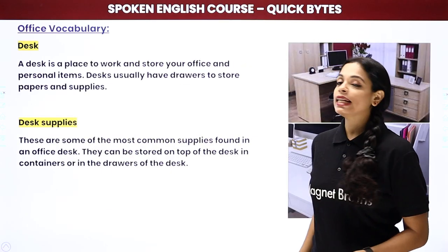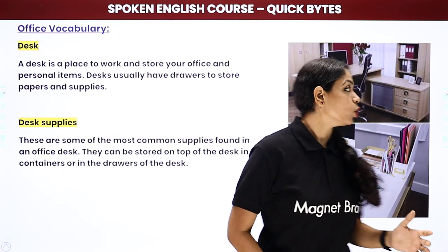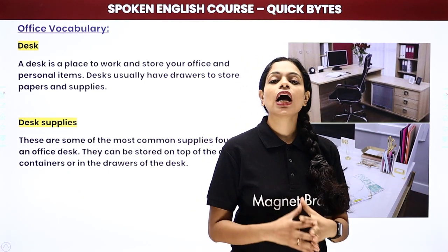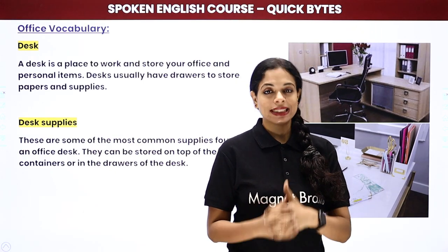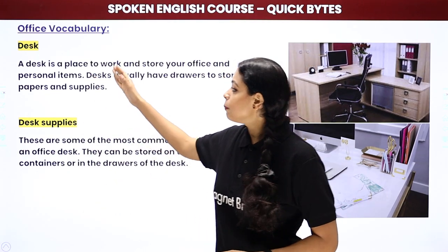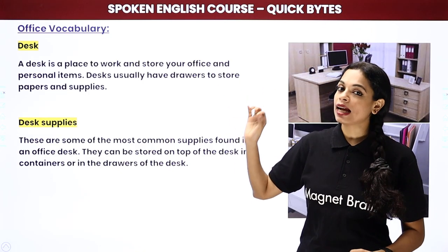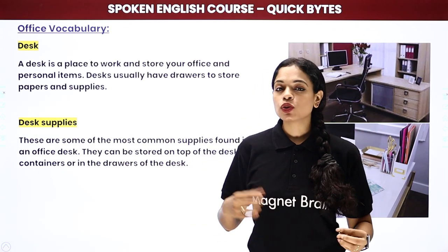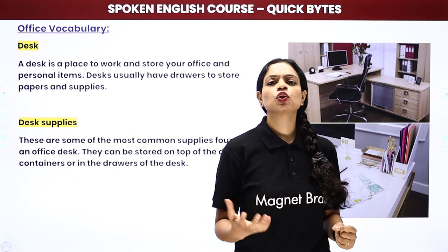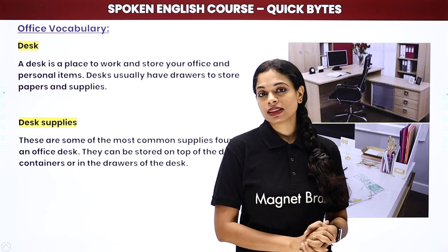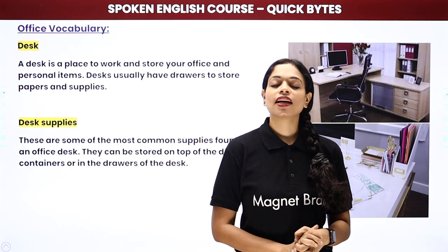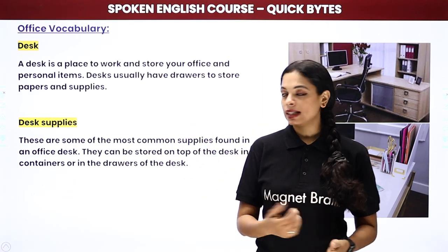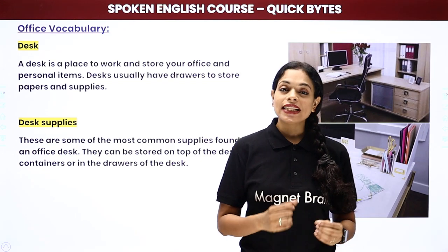Next we have a desk. A desk is the place where you sit and work — your cubicle area is called your desk. A desk is a place to work and store your office and personal items. You can keep notebooks, stationery, a stress ball — papers and supplies. After the desk, we have desk supplies, which includes everything on your desk.